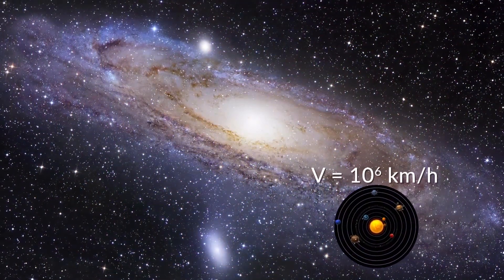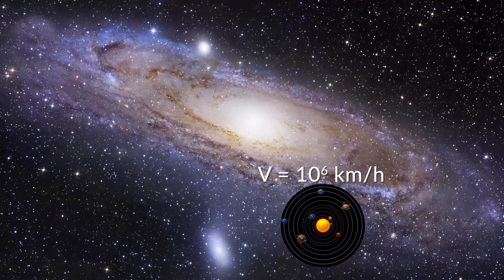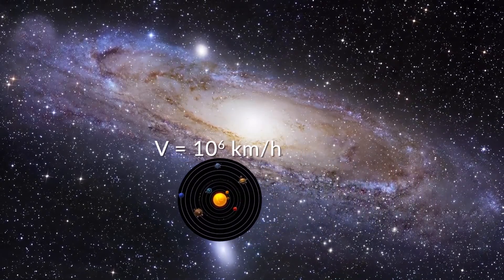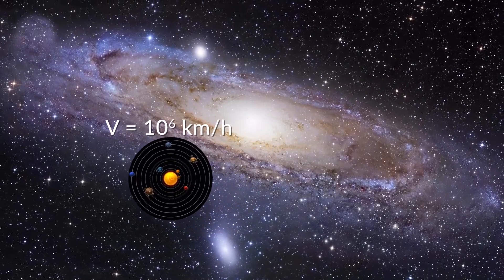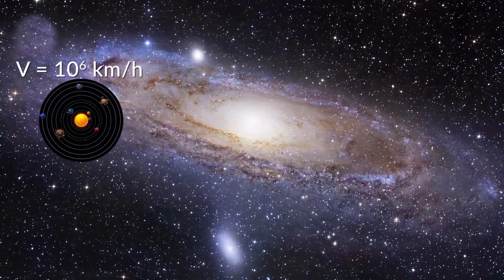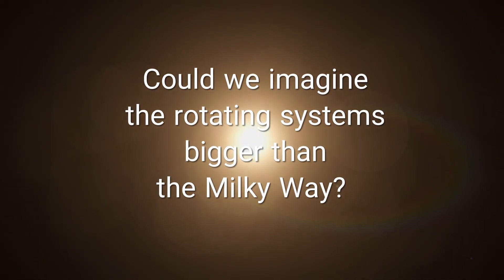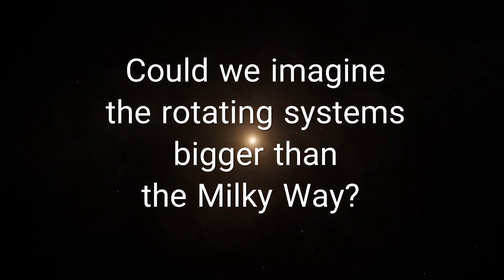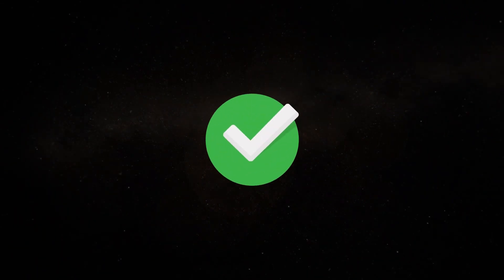The next bigger system is the Milky Way galaxy in which the solar system revolving around its own central mass, central black hole with a speed exceeding 10 to the power of 6 km per hour.